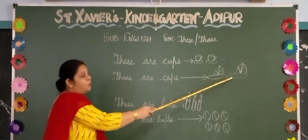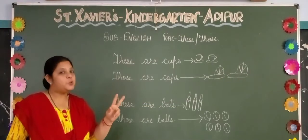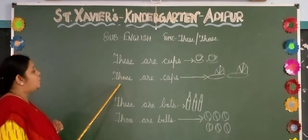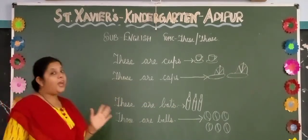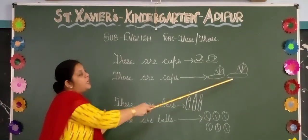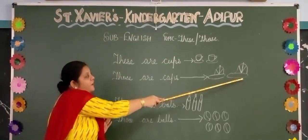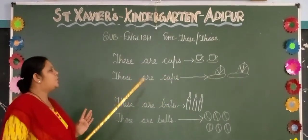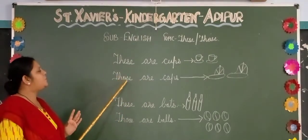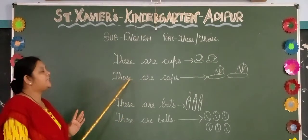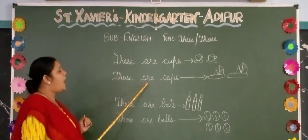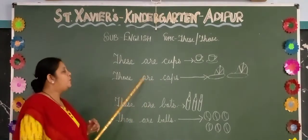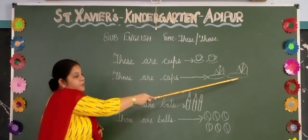How many caps are there? Two caps. So what will we say? 'Those.' Why? Because those caps are far. These caps are near, so for the far ones you will say T-H-O-S-E. Those are caps.